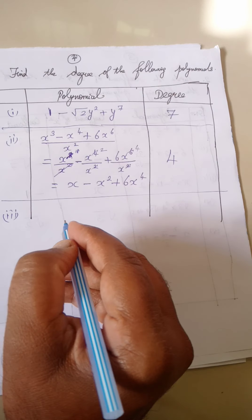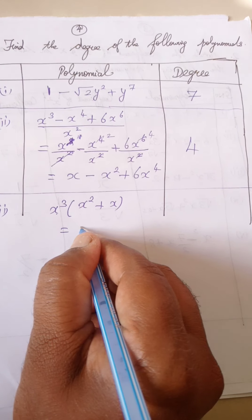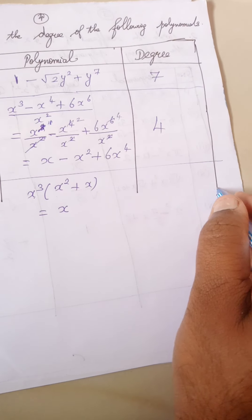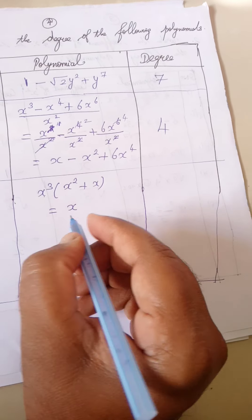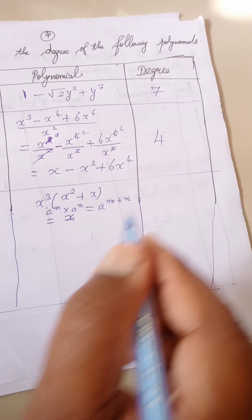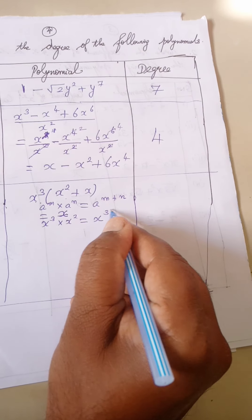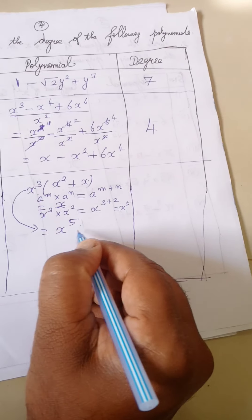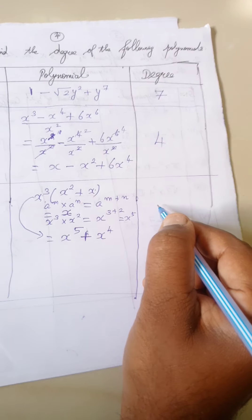Third one: x cube into x square plus x. Using the formula a power m into a power n equals a power m plus n, x cube into x square gives x power 3 plus 2 equals x power 5. So the degree is 5.